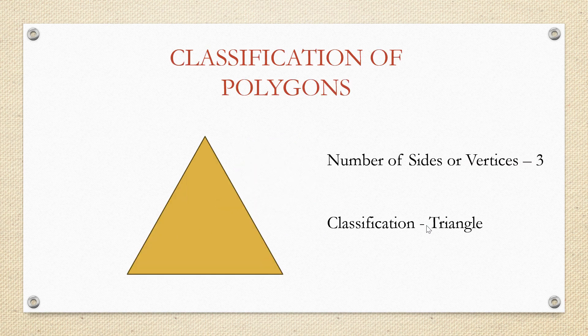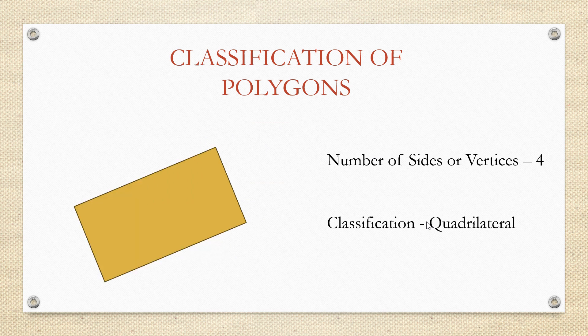Classification of polygons. Polygons can be classified depending upon the number of sides or vertices it has. If a polygon has three vertices, it's called a triangle. Four vertices, quadrilateral.